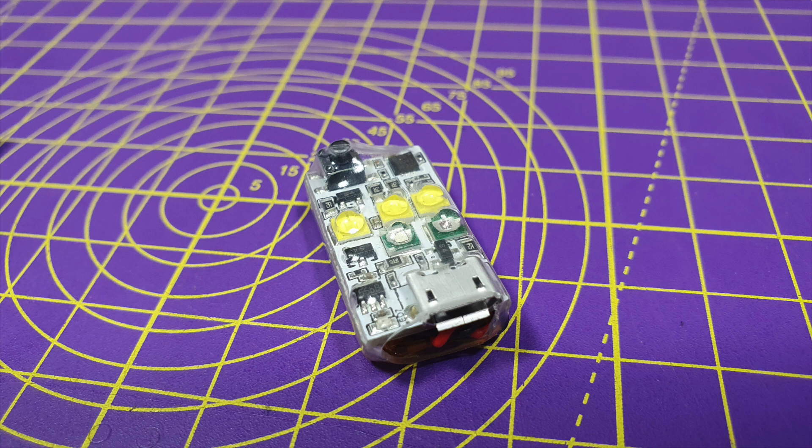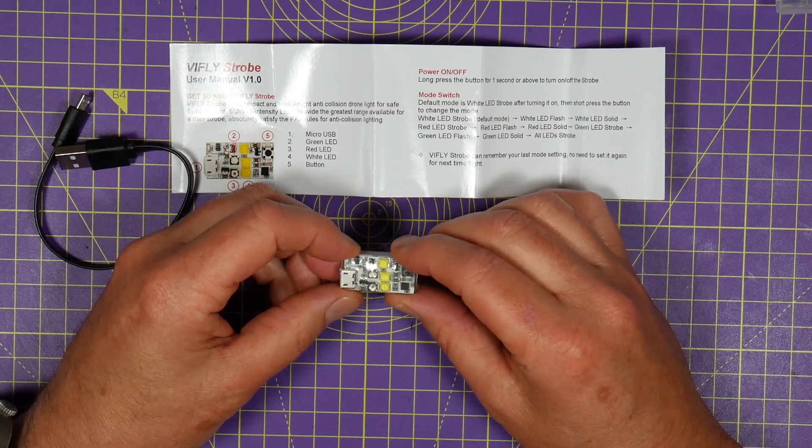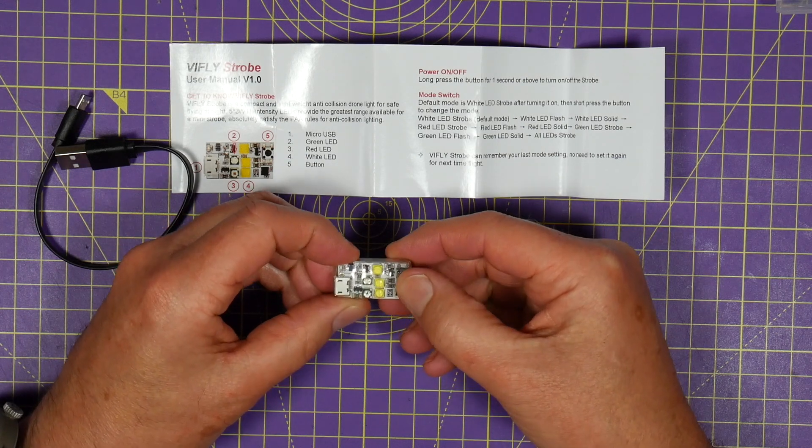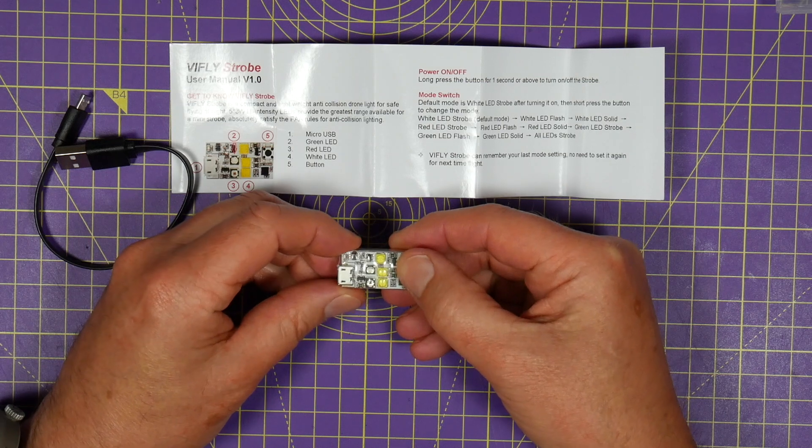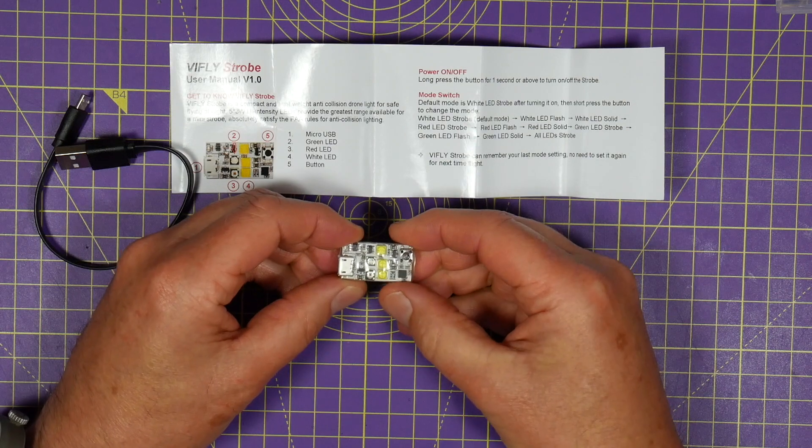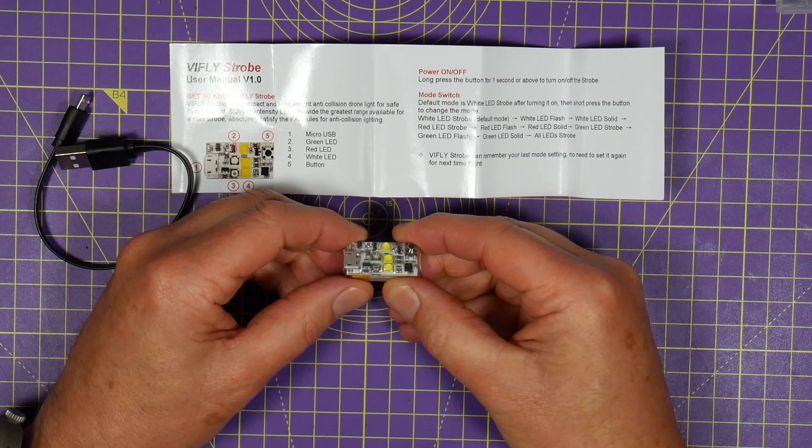I have turned this on before just to check things. Turning it on is this button here, you just press and hold it so watch out it's unbelievably bright. The camera's probably going to compensate for that but it's incredibly bright.